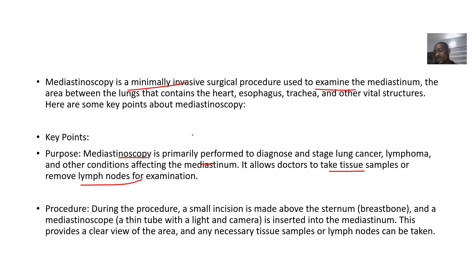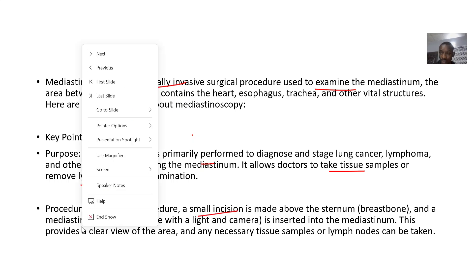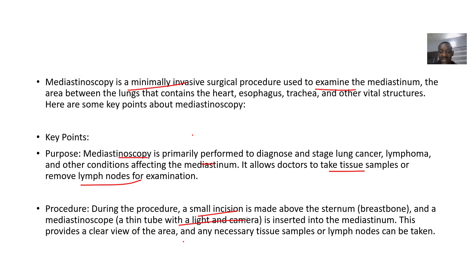For the procedure, a small incision is made above the sternum — that's the breast bone — and a mediastinoscope, which is a thin tube with a light and camera, is inserted into the mediastinum. This provides a clear view of the area, and any necessary tissue samples or lymph nodes can be taken from the area.